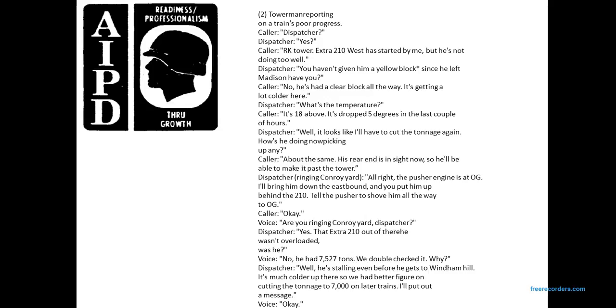Tower man reporting on a train's progress: Caller says 'Dispatcher.' Dispatcher says 'Yes.' Caller says 'RK Tower. Extra 210 West has started by me and is not doing too well.' Dispatcher says 'Have you given him a yellow block since he left the yard? Have you?' Caller says 'No, he has had a clear block all the way and it's getting colder here.' Dispatcher says 'What is the temperature?' Caller says 'It's 18 above and dropped 5 degrees in the last couple of hours.' Dispatcher says 'I may have to cut the tonnage. Is he picking up any speed?' Caller says 'About the same — rear end is passing the tower now.' Dispatcher says 'Ring Conroy Yard. The pusher at OG will bring him to the eastbound. Put him up behind the 210 and tell the pusher to shove him all the way to OG.' Caller says 'Okay.'